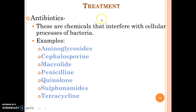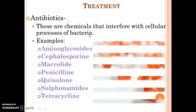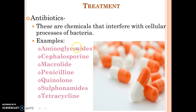The treatment of bacterial diseases uses antibiotics — chemicals that interfere with cellular processes of bacteria. Types include: Aminoglycosides, Cephalosporins, Macrolides, Penicillin, Quinolones, Sulfonamides and Tetracycline.